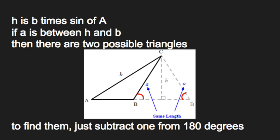If A is between H and B, then there are two possible triangles. To find them, just subtract one from 180 degrees.